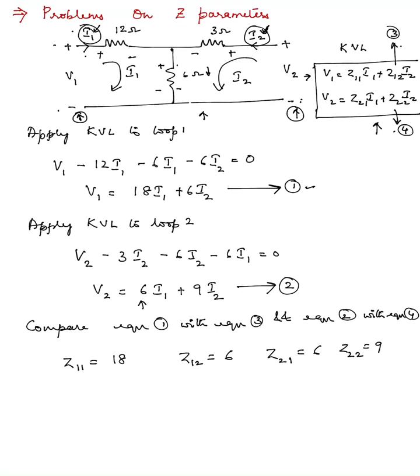I think comparing is very easy, comparing equation 1 and 3. Wherever you have Z11, you have 18. Z12 it is 6. So the Z parameters of this circuit are 18, 6, 6, and 9. This is the Z parameter of this circuit.